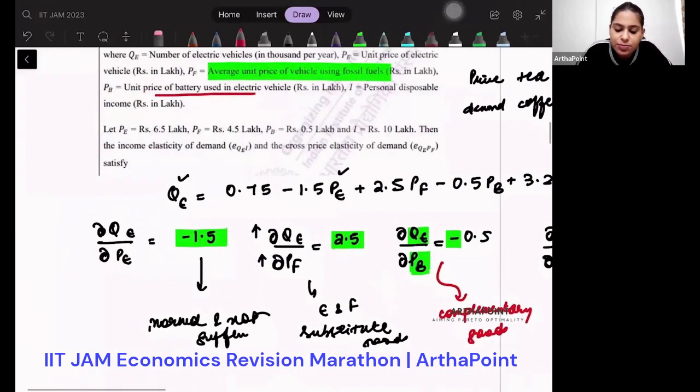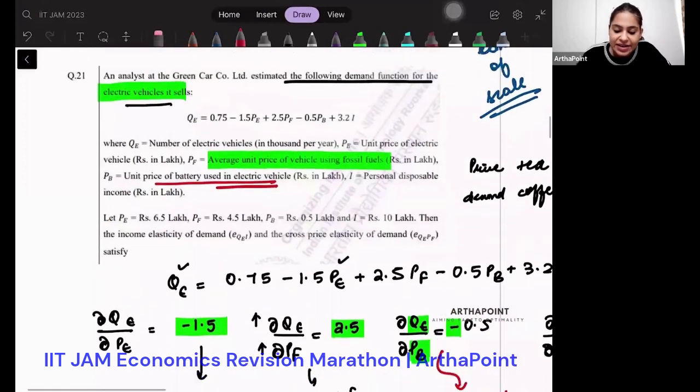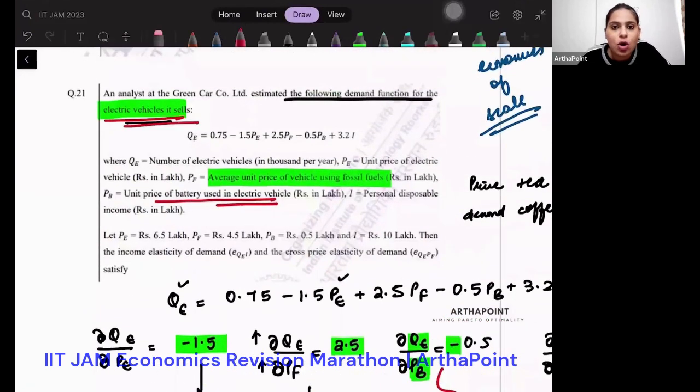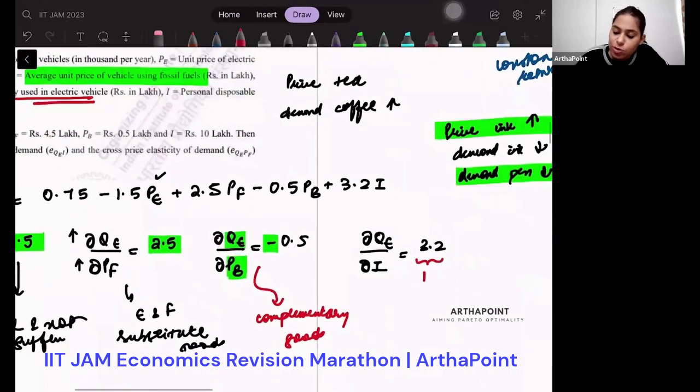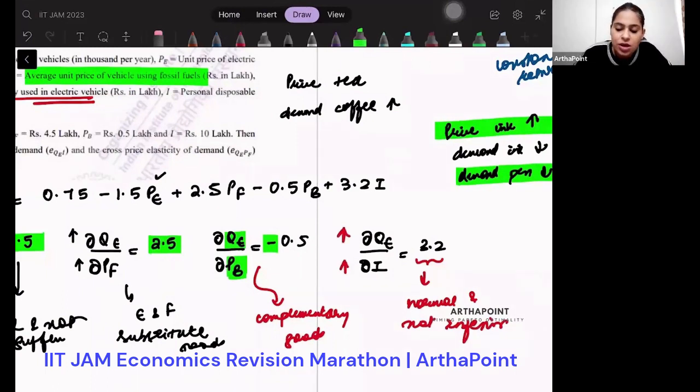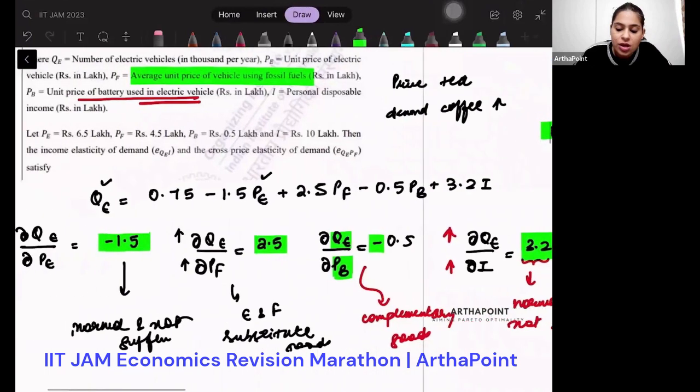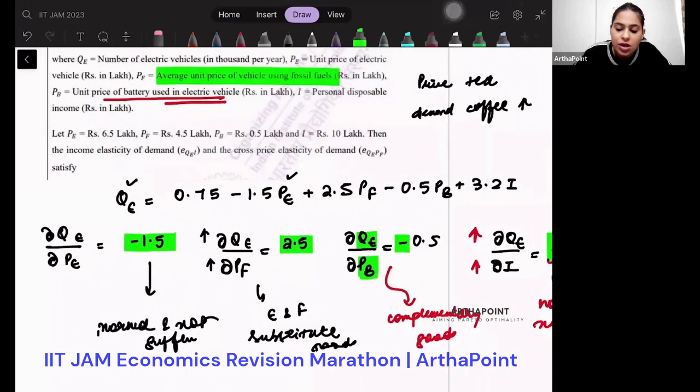So I've got that E and B are complementary goods. What is B? B is the unit price of battery. Of course, battery and electric vehicles have to be complementary to each other. And finally, I see that this is also positive, which means it is normal. So if they would have asked somewhere in the options about these properties, we should be well thorough with how the sign can enable us to estimate the properties of different kinds of goods.